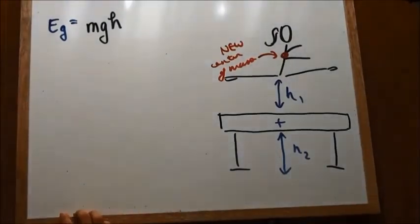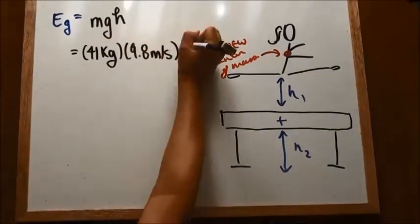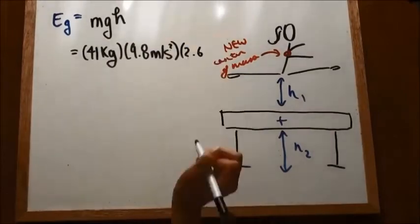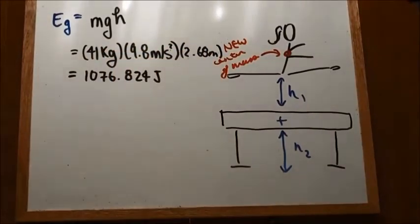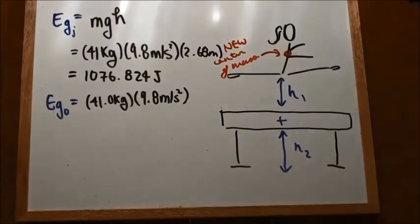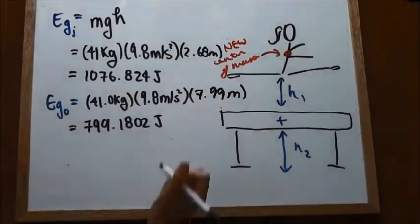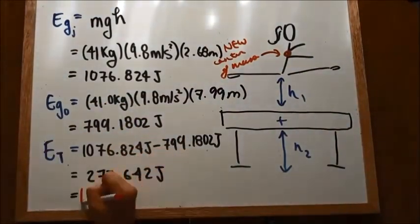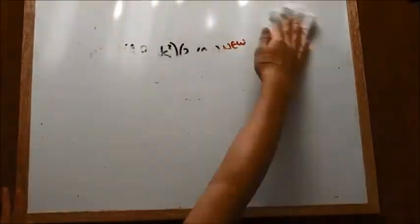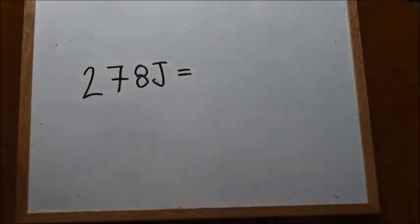To find the energy she used to perform this jump, we have to subtract the potential gravitational energy she already had because she started off on the beam. So again, we use the height of the beam and the height of her center of mass, which this time is a lot lower because of her weight being distributed a lot lower. We end up with 278 joules. This is the equivalent to lighting five 60 watt light bulbs for one second.